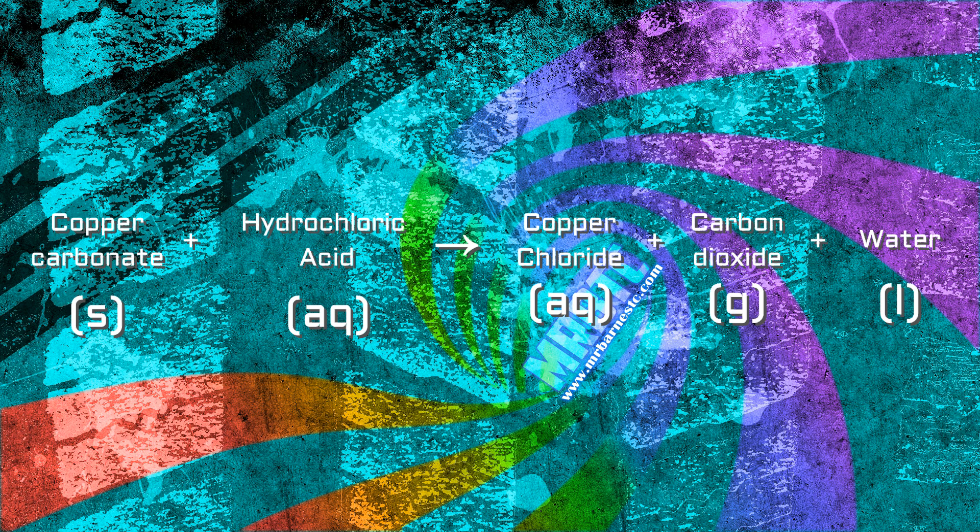As you can see from the state symbols here I've got copper carbonate which is a solid, hydrochloric acid which is aqueous and then I form copper chloride which is aqueous, carbon dioxide which is a gas and water which is a liquid. So you would see the solid disappearing and you would see a gas forming which would give you bubbling, fizzing or effervescence.